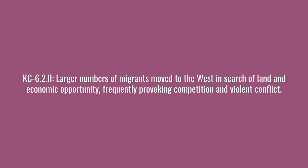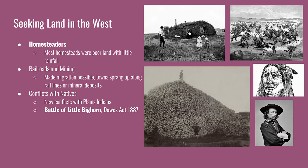The next key concept says larger numbers of migrants moved to the West in search of land and economic opportunity, frequently provoking competition and violent conflict. Homesteaders took advantage of the Homestead Act of 1862, receiving 160 acres of federal land with a clear title if they stayed and improved it for five years. Passed during the Civil War, the law disqualified anyone who had taken up arms against the United States. However, the quality of homestead land wasn't great—good land with rainfall, waterways, or transportation routes was usually owned by speculators and railroad companies, and most homesteaders failed within the five-year period.